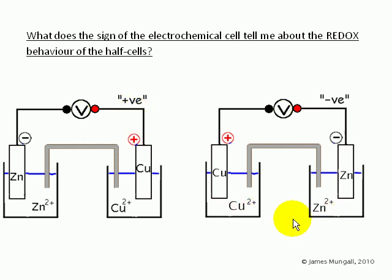However, if the zinc and the copper are switched the other way around, then the copper is now on the left-hand side. That's the positive electrode, and so we would record a negative there.